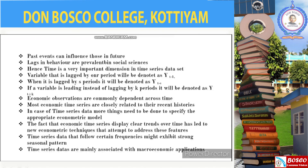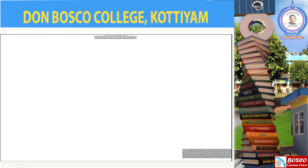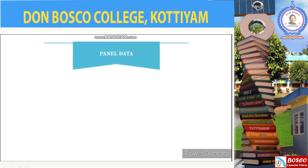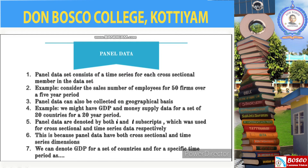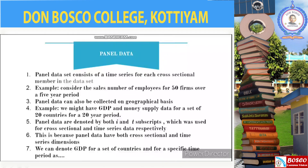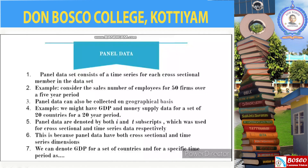The last type of economic data is panel data. A panel data set consists of a time series for each cross-sectional member in the data set. For example, we could consider the sales and the number of employees for 50 firms over a five-year period. Panel data can also be collected on a geographical basis — for example, we might have GDP and money supply data for a set of 20 countries over a period of 20 years.